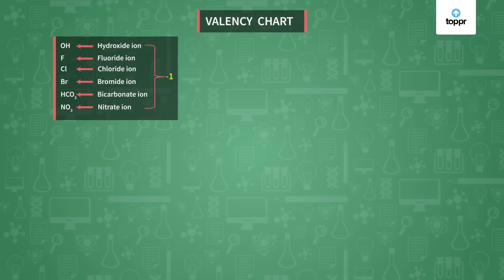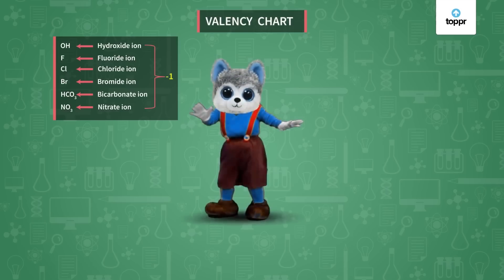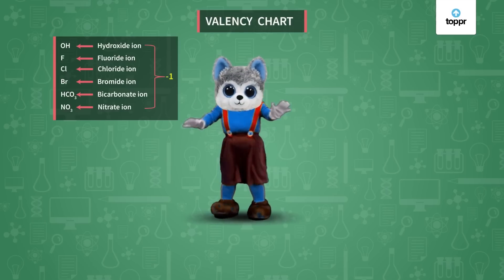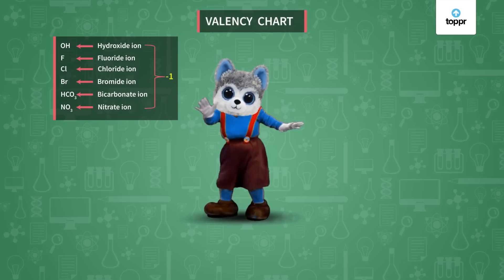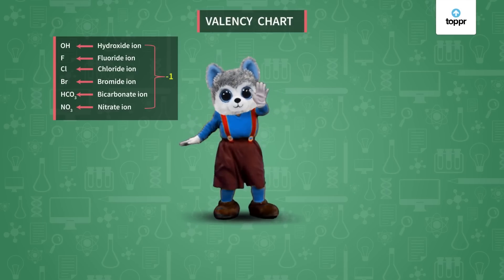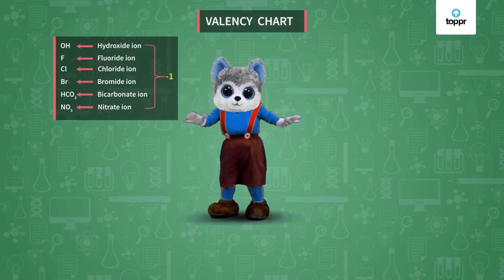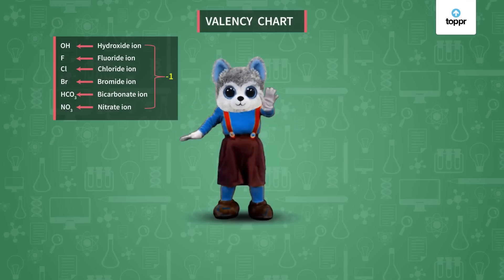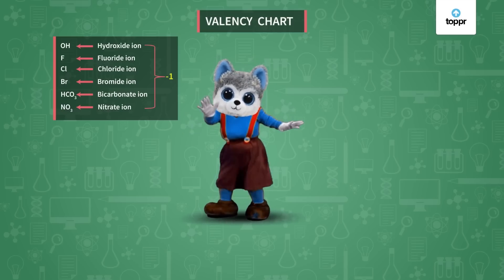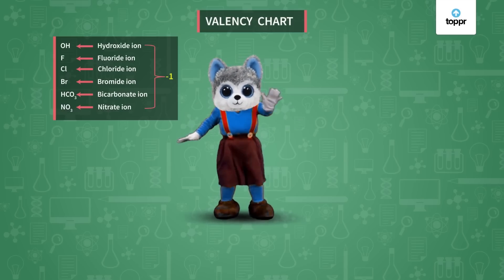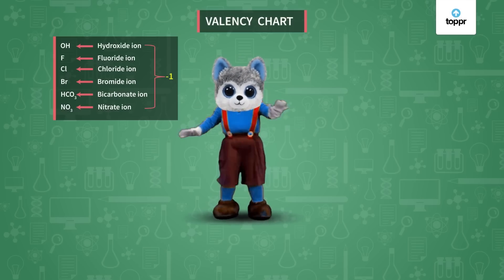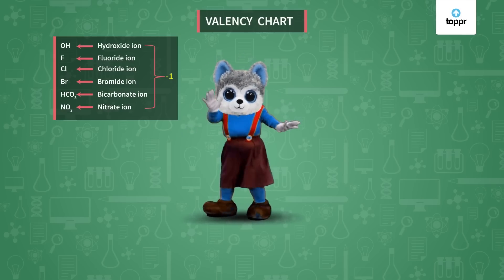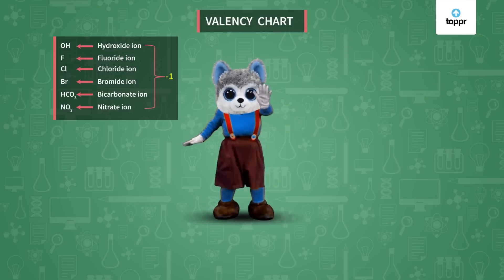Sing with me again: Hydroxide, fluoride, chlorobromide, chlorobromide, chlorobromide, hydroxide, fluoride, chlorobromide, bicarbonate, nitrate — their valency is 1.